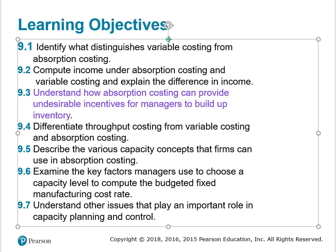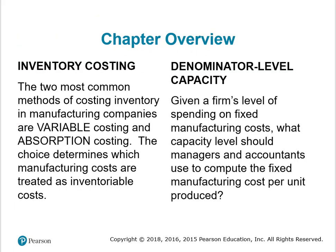Today we have so much uncertainty in our markets, so you can understand why these are sensitive issues. Our two major topics in this chapter are inventory costing and capacity level issues. For inventory costing, the two most common methods in manufacturing companies are variable costing and absorption costing. When you see the word absorption, think of it as absorbing — that the inventory is absorbing overhead, in particular fixed overhead.